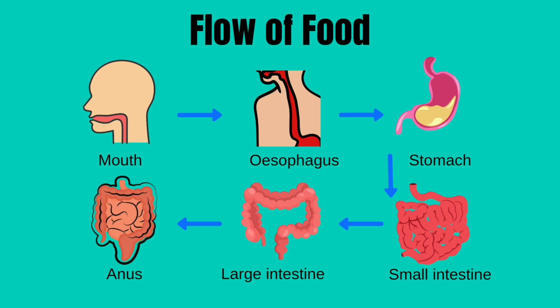Let's see the flow of food. The digestion starts at the mouth and then to the esophagus. Then the food will be passed to the stomach and then small intestine, large intestine, and finally will end up in the anus.